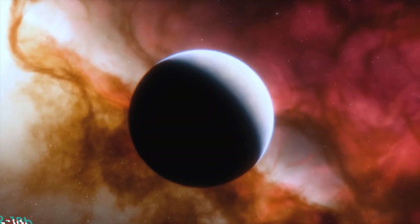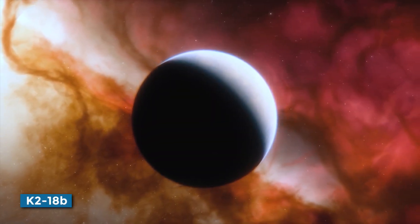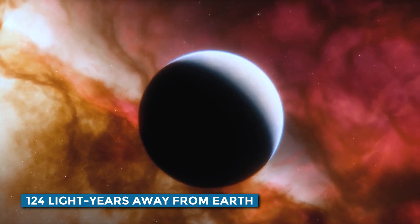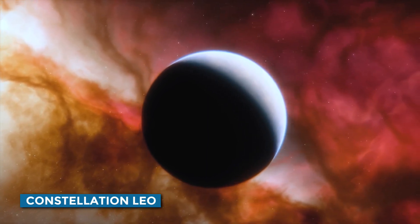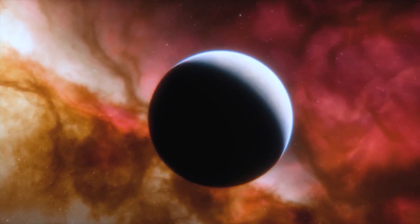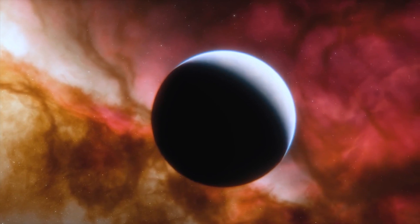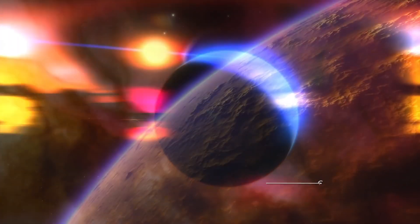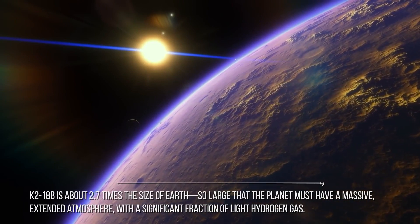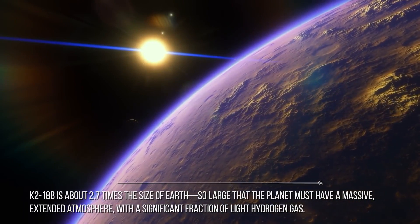This exoplanet K2-18b is located approximately 124 light-years away from Earth in the constellation Leo. It's not the only exoplanet scientists found the potential for life, but fortunately, it is one of the first exoplanets discovered within the habitable zone of its parent star, where conditions might be just right for liquid water to exist on its surface.